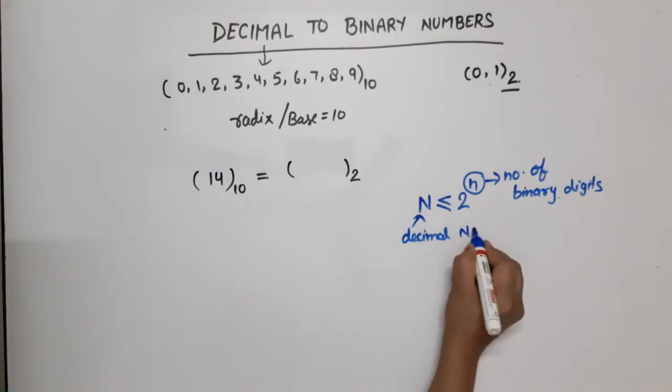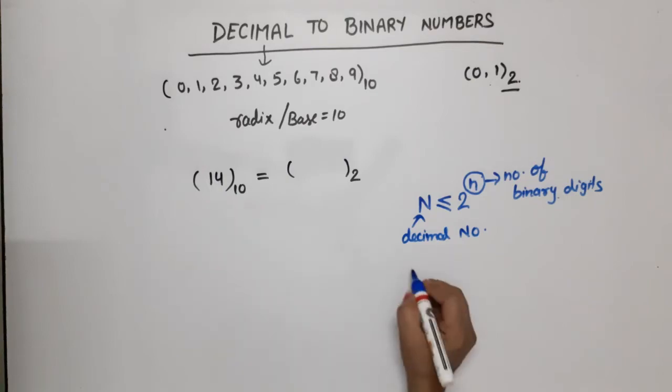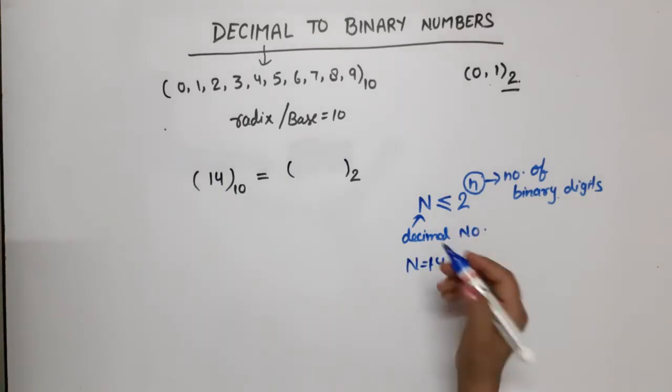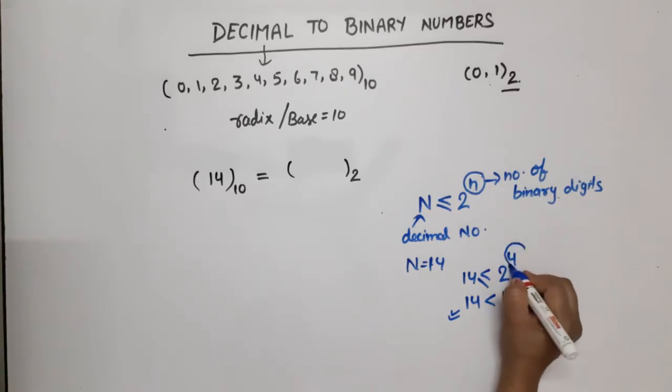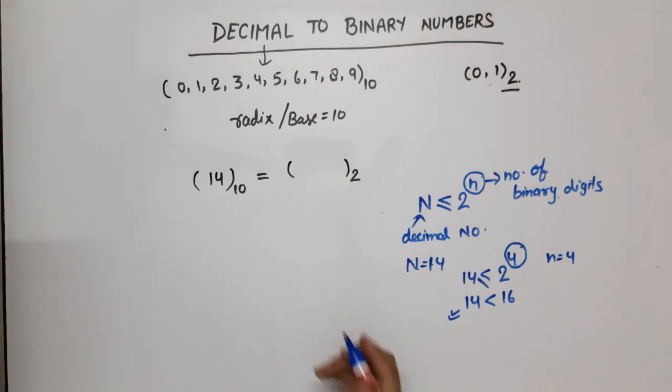In this question, capital N is 14. If we put the value, 14 is less than or equal to 2 raised to power 4. What will we get? 14 is less than 16, meaning this condition is satisfied. The number of bits is 4, so small n value is 4. Now our binary number will have 4 digits.